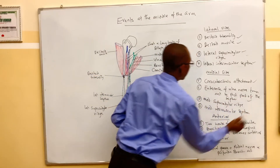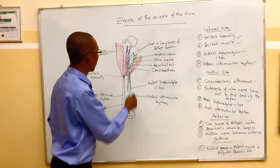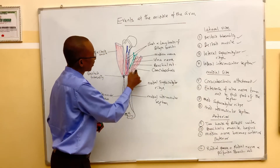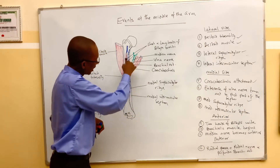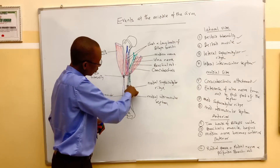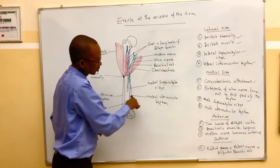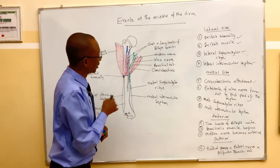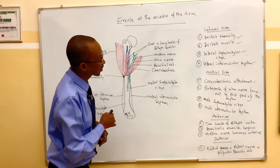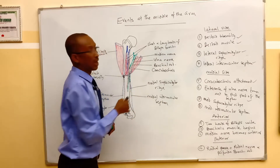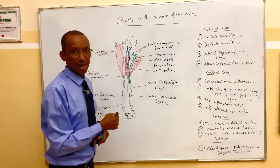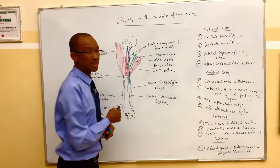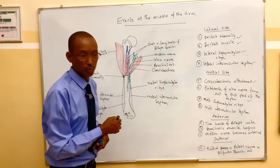Similarly, the medial supracondylar ridge also begins approximately from the middle of the arm, and then it goes down towards the medial epicondyle. This medial supracondylar ridge gives attachment to the medial intermuscular septum.